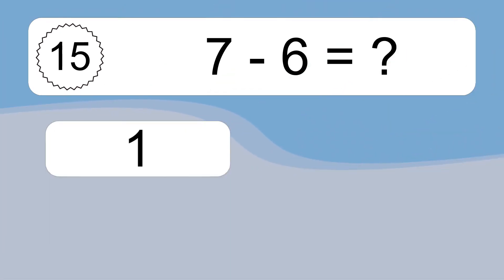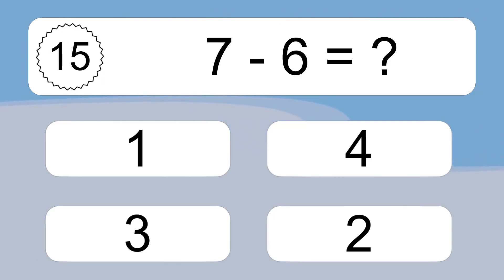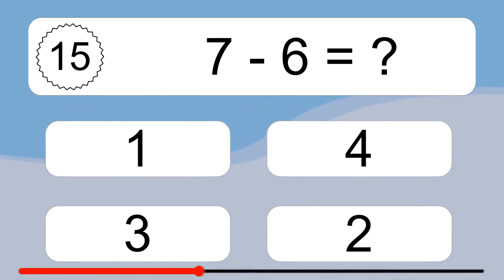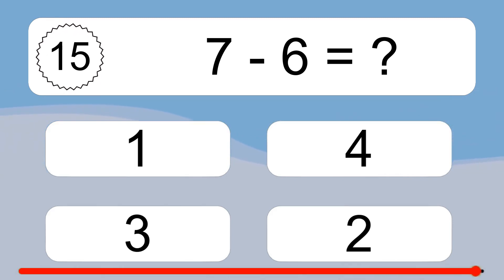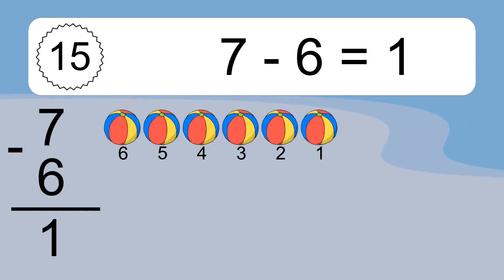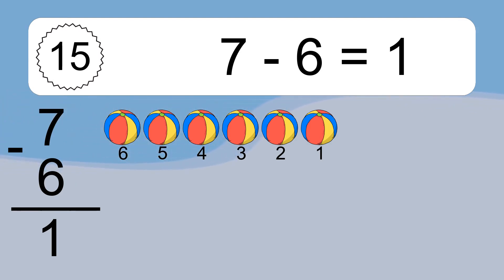7 minus 6 equals what? 7 minus 6 equals 1. Let's count it: 6, 5, 4, 3, 2, 1.